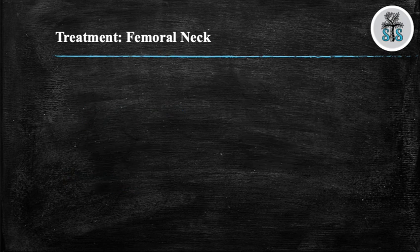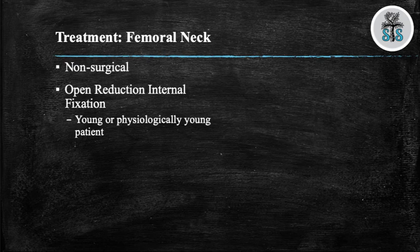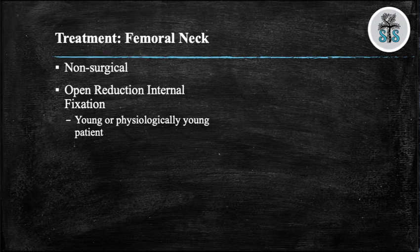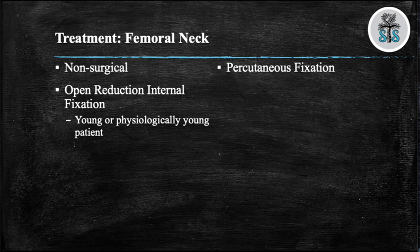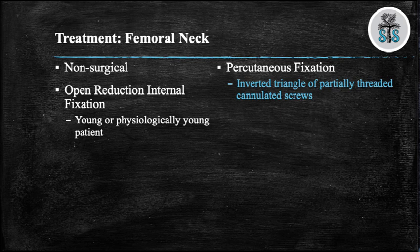We'll now go over the different treatment options. First is non-surgical. Open reduction with internal fixation is the treatment for young or physiologically young patients that sustain a non-displaced or displaced femoral neck fracture, as you want to try to preserve their femoral head before undergoing arthroplasty. Percutaneous fixation with three partially threaded cannulated screws in an inverted triangle configuration is the treatment of choice for non-displaced femoral neck fractures.